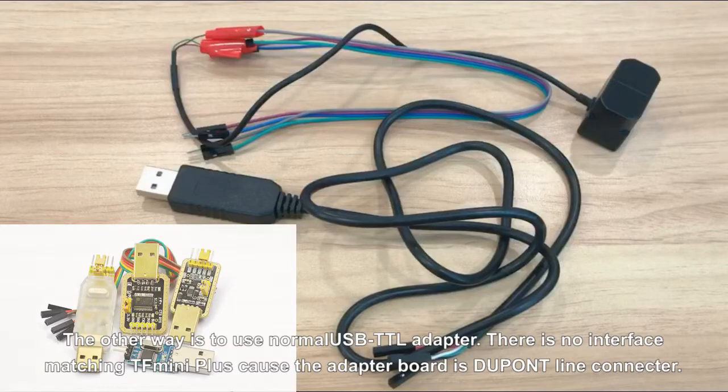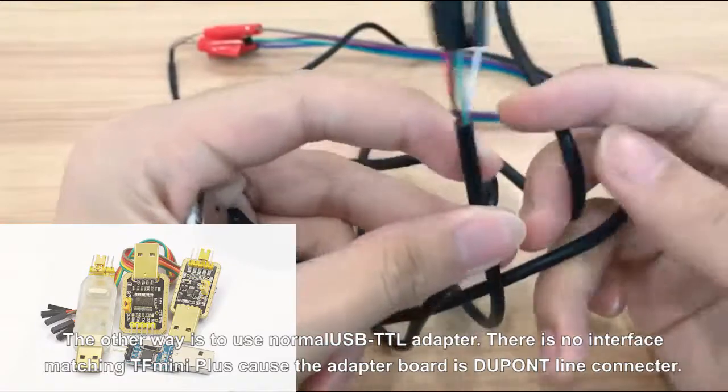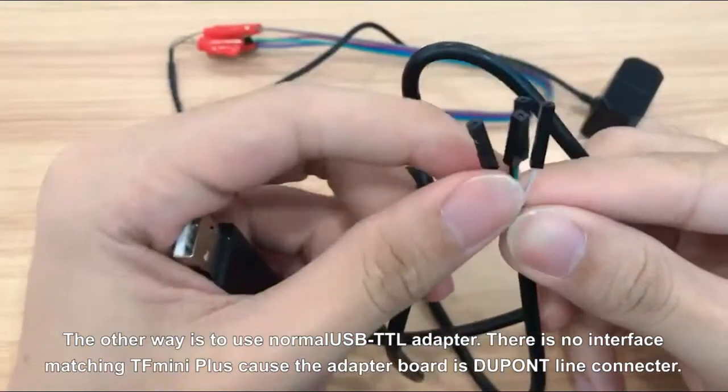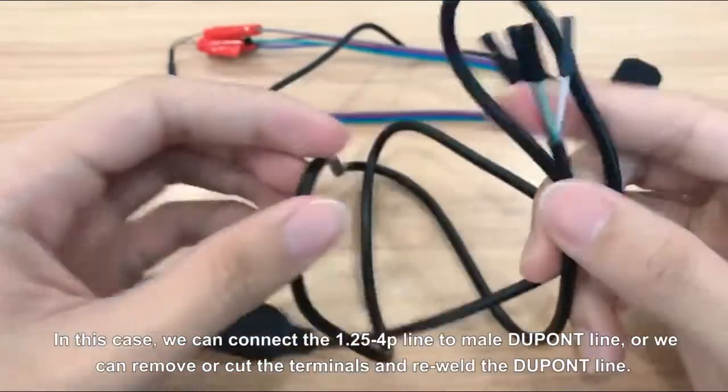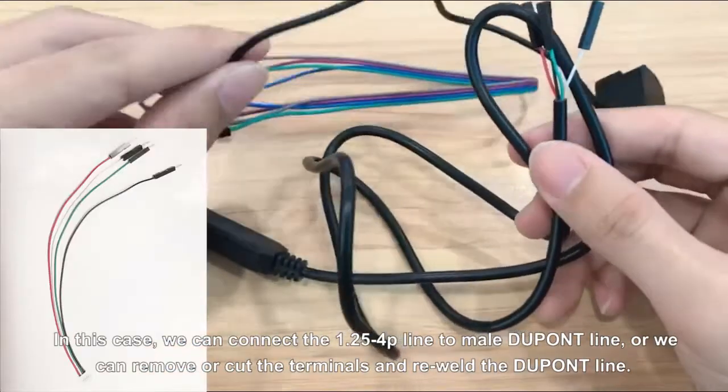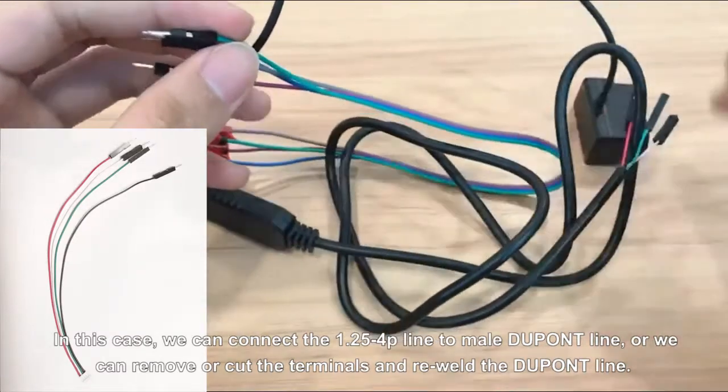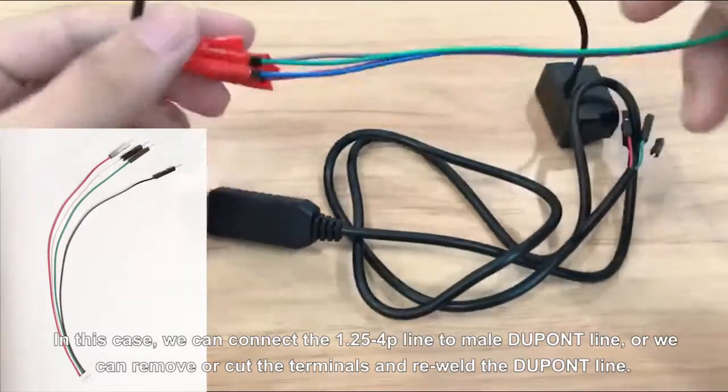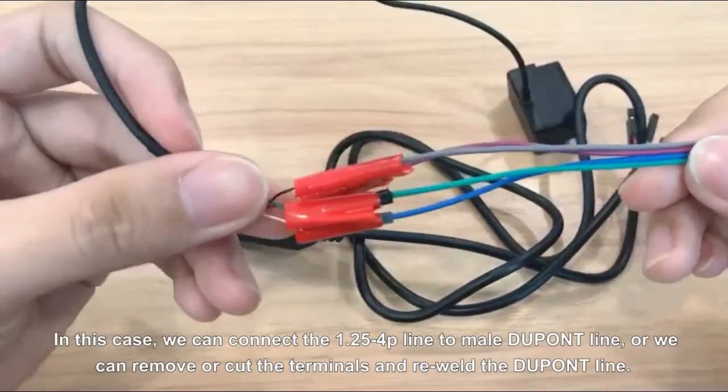The other way is to use normal USB to TTL adapter. There is no interface matching TF Mini Plus, because the adapter board is 2.54 connector. In this case, we can connect the 1.25mm 4P connector line to male 2.54, or we can remove or cut the terminals and reweld the 2.54.